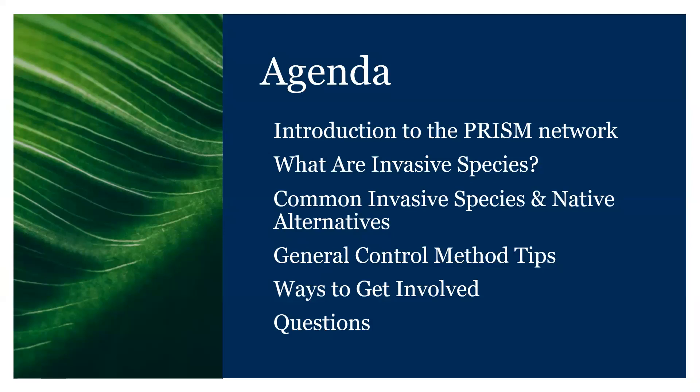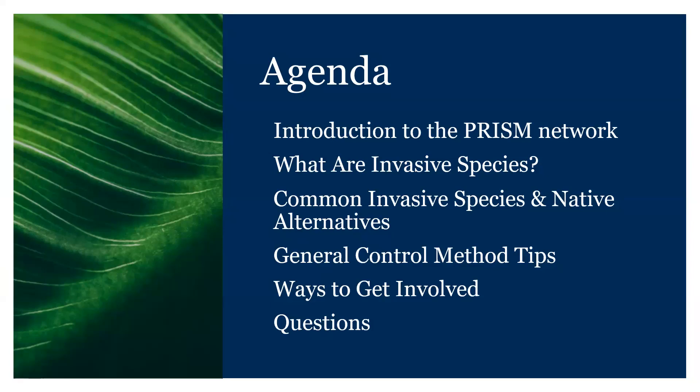Here's just a quick snapshot of what we'll cover today. I'll give a brief overview of the PRISM network and invasive species. I'll provide some examples of common invasive garden plants and their native alternatives, some general control methods, and some ways you can get involved. There will be time saved at the end for open discussion and questions, but feel free to put things in the Q&A section as you think of them.